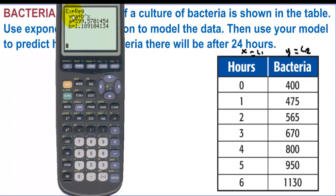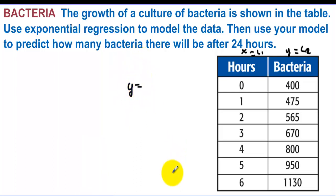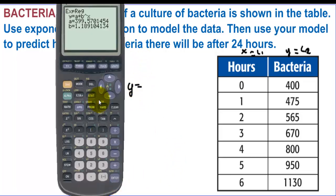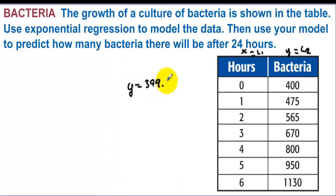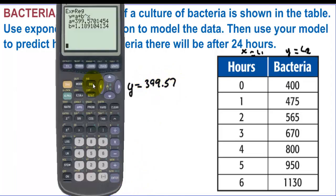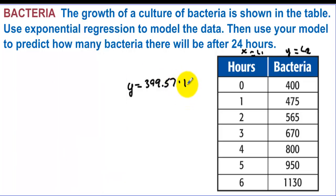Well now it's telling us that we have the function. We have the exponential function. We have y equals. And we have 400 for the a. Or let's go, how about we go 399.57. And then our base is 1.189. So times 1.189 to the x.